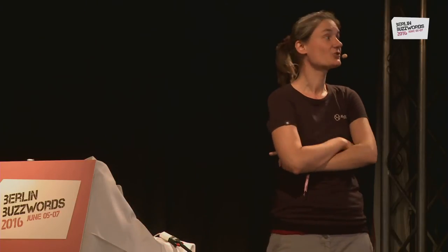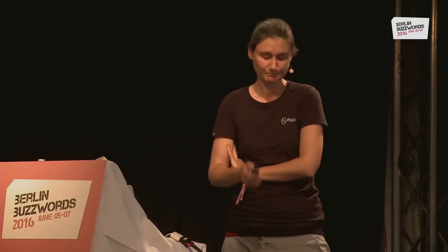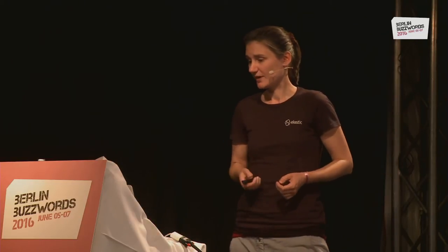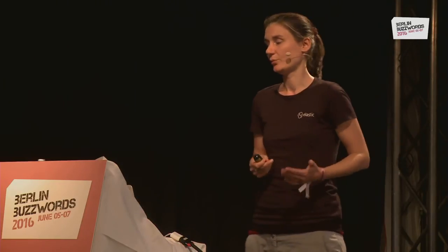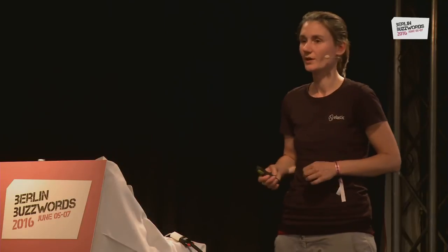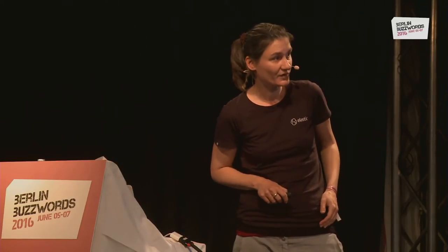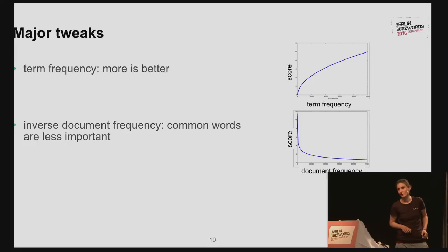Unfortunately, using term frequency alone is tricky because very common terms like 'the,' 'a,' or 'who' occur in nearly every English document, so their term frequency will be high and would screw up your score. This is why the term frequency is weighted by the inverse document frequency, which means common words that appear in many documents are less important. The inverse document frequency gives a lower value the more often a term occurs in documents, and this is multiplied with the term frequency.